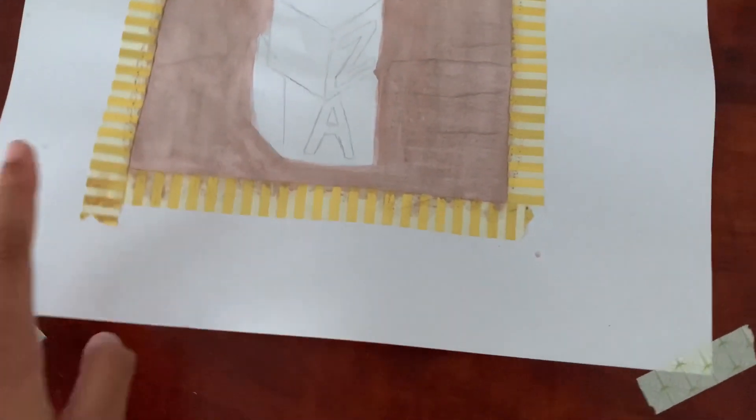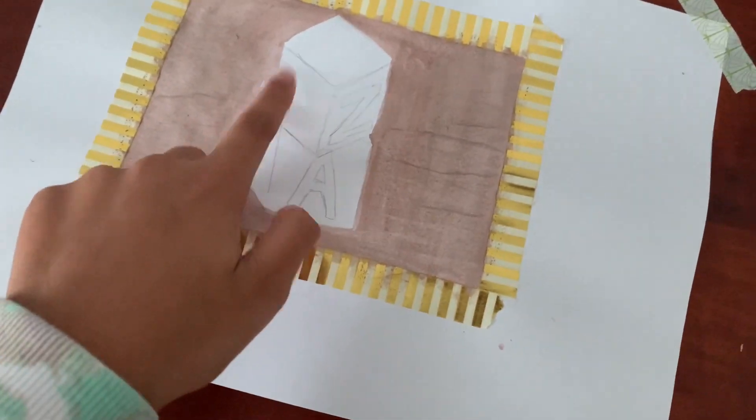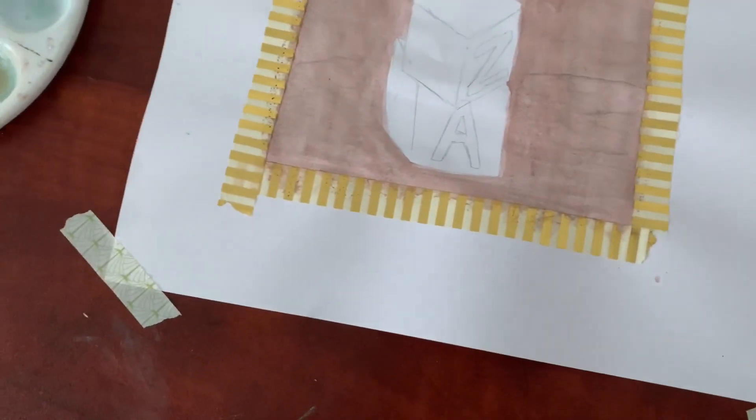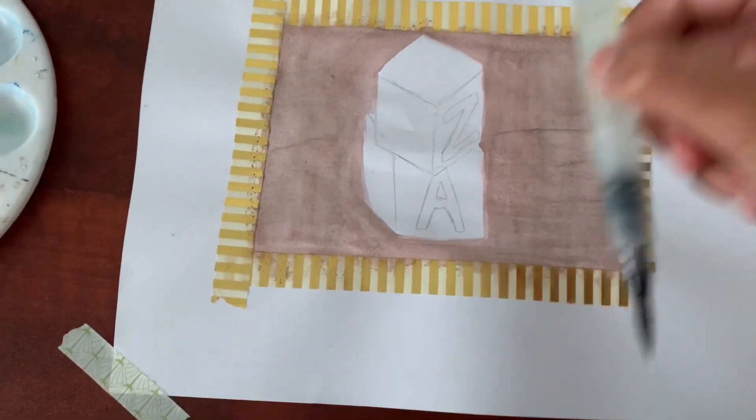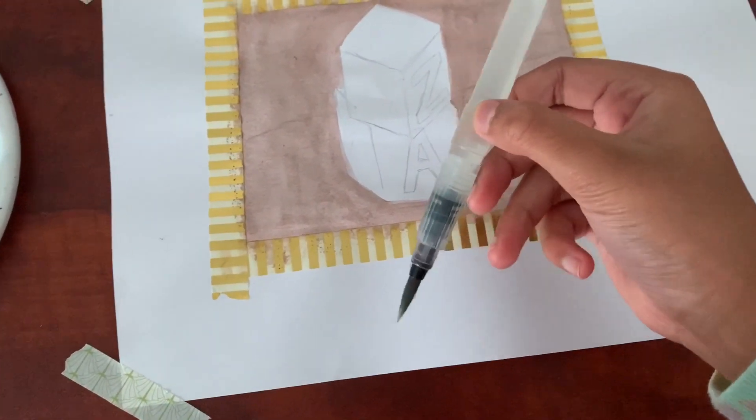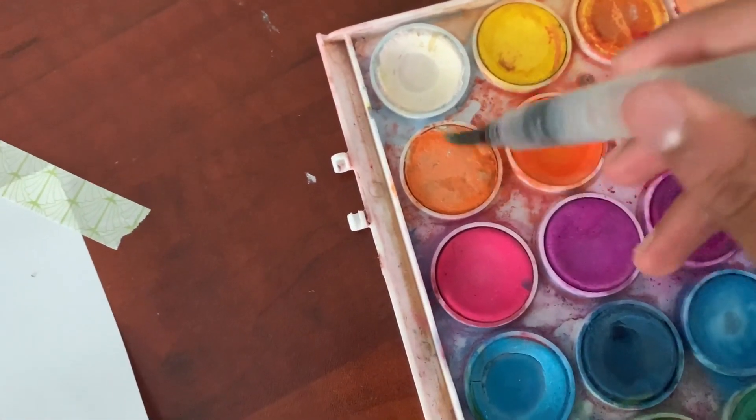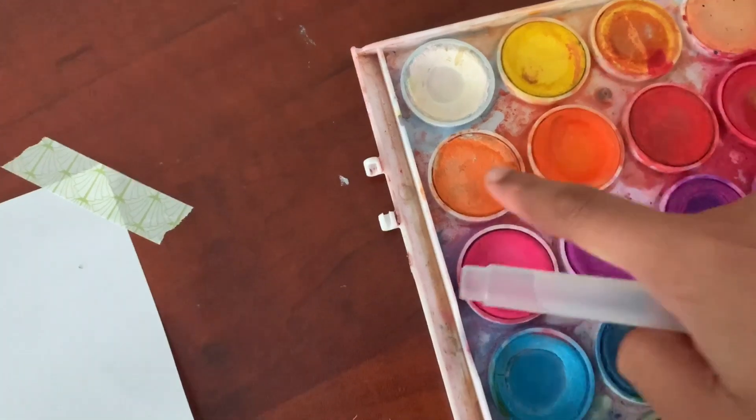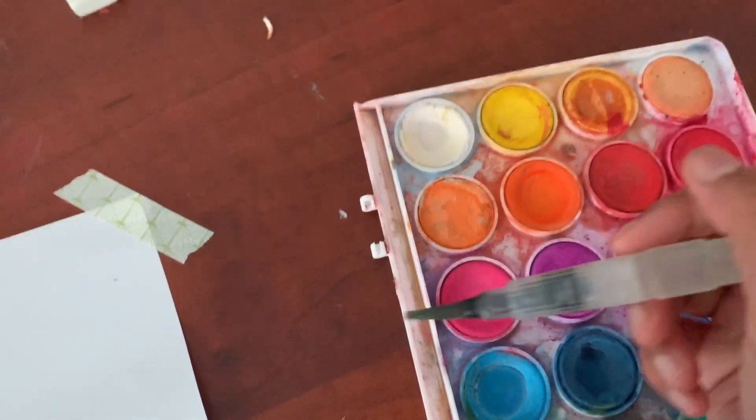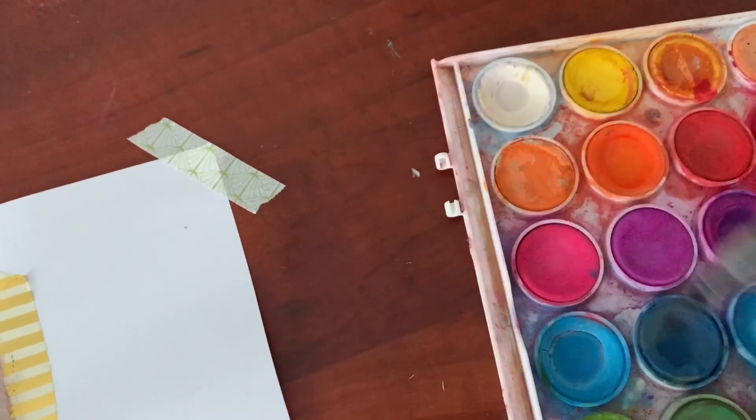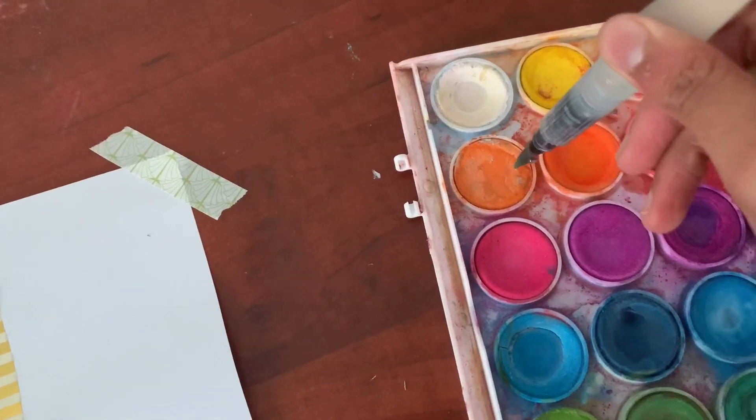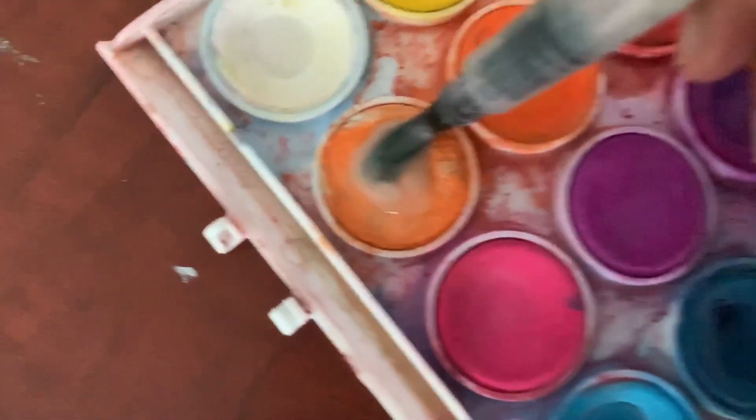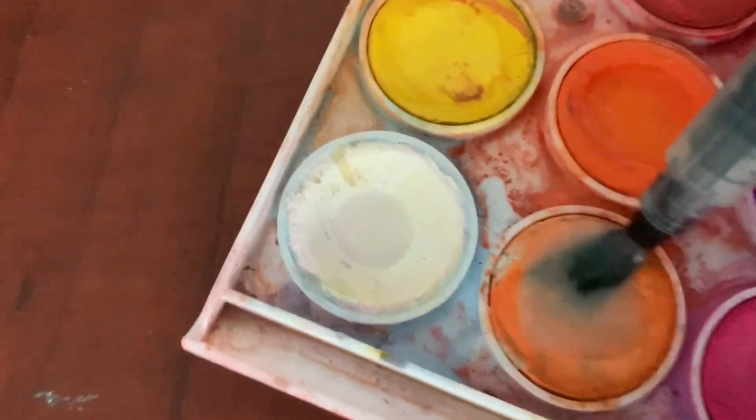And now I'm going to paint the building blocks using my water brush again, and I'm going to be using this peachy orange color. This qualifies as orange to me. It's practically just orange with white in it.